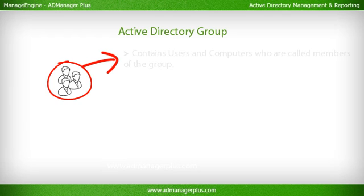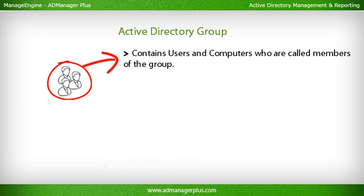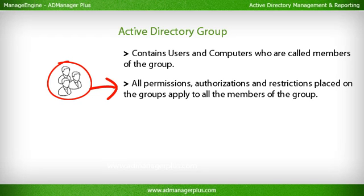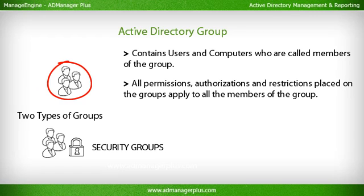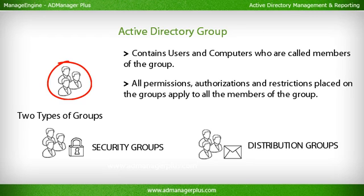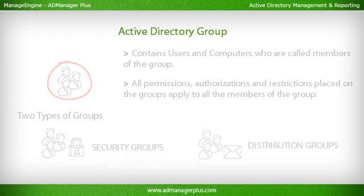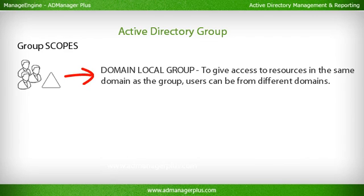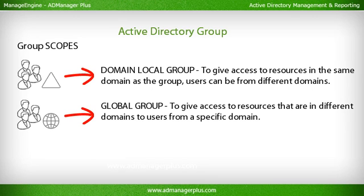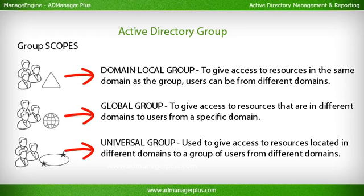An Active Directory group contains users and computers called members of the group. All permissions, authorizations, and restrictions placed on the group apply to all its members. There are two types of groups: security groups, used to grant permissions and set restrictions on users to resources; and distribution groups, used to send email messages to a group of users. Group scopes include: domain local group (access to resources in the same domain, users can be from different domains), global group (access to resources in different domains for users from a specific domain), and universal group (access to resources in different domains for users from different domains).